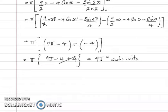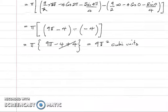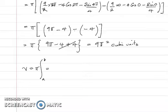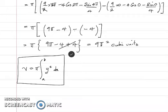One more time: the volume of a solid of revolution — if the curve y = f(x) is rotated between x = a and x = b about the x-axis one revolution — that volume V is equal to π times the integral from a to b of y² dx. We will do more questions involving the use of this formula.